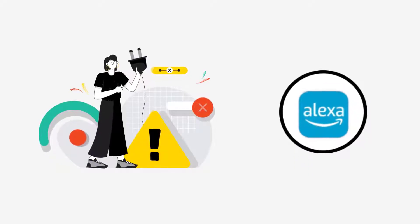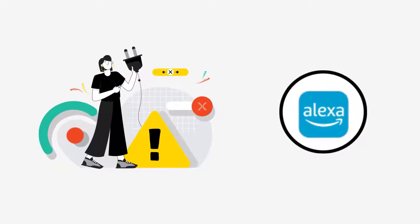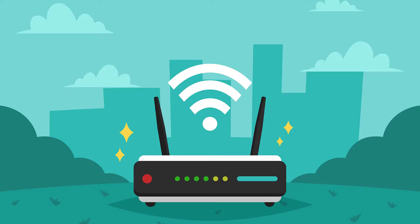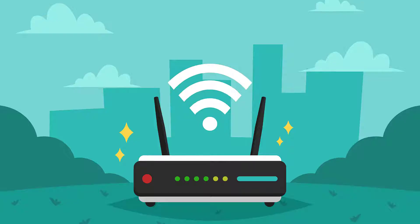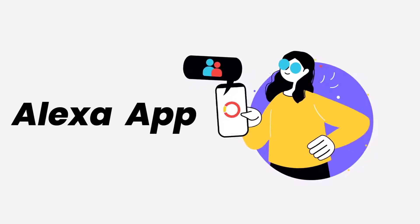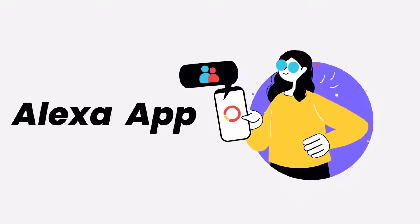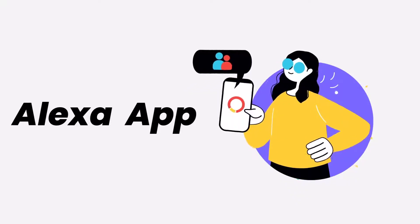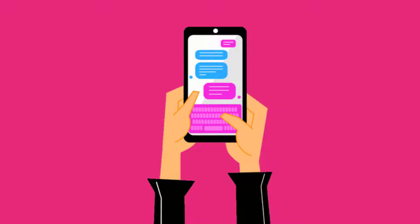It might be possible that you're not able to log into the Alexa mobile app due to a connectivity issue. First of all, you need to make sure you have a strong and stable internet connection. To do so, you need to do a quick test — simply open up an app that runs on the internet, other than the Alexa mobile app, and check if it's working or not.